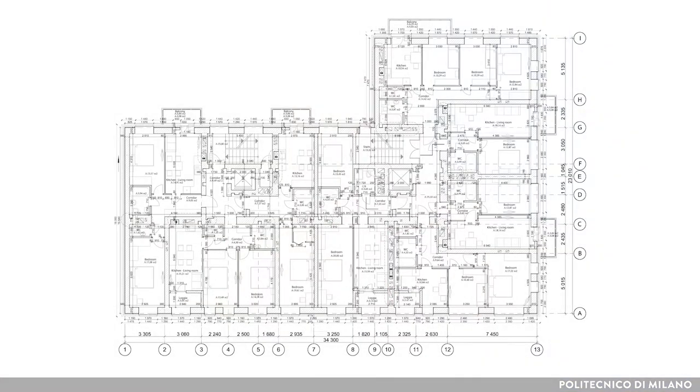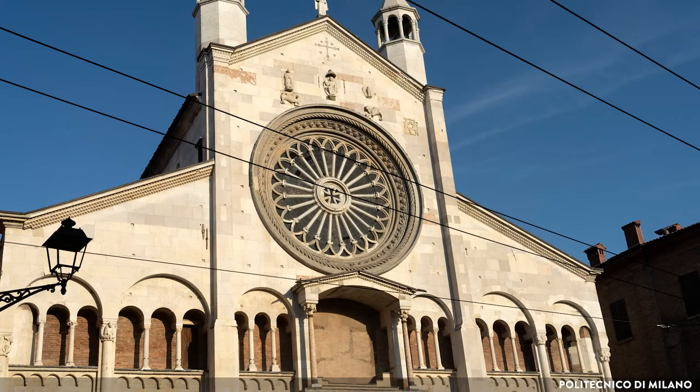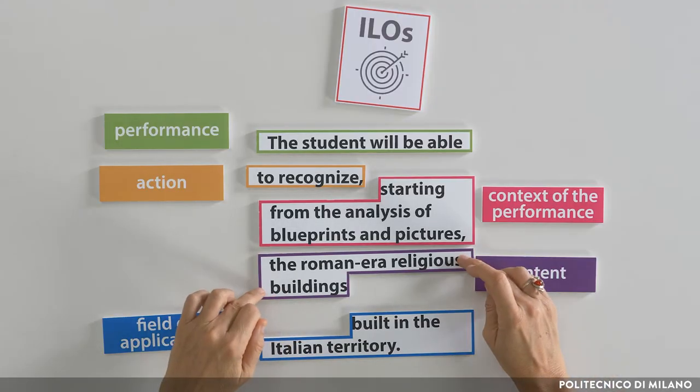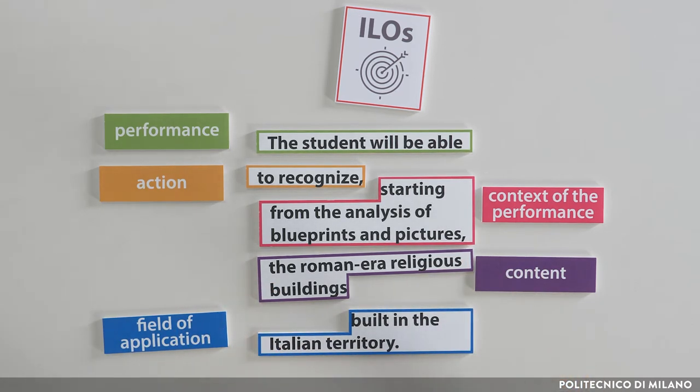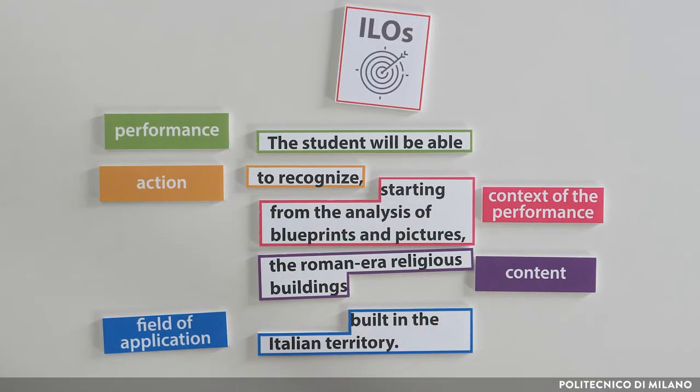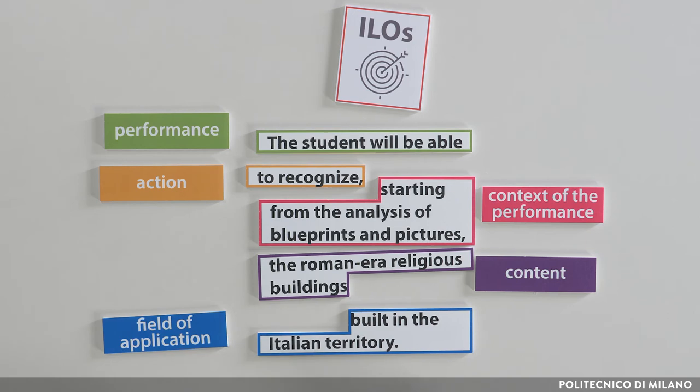I could provide students with a number of plans and photographs of buildings in different styles, created in various contexts, and ask them to recognize the ones in a Romanic style built in the Italian territory and identify them correctly. If, on the other hand, I asked them to write an essay describing the key features of Romanic style buildings in the Italian territory, I would verify a slightly different intended learning outcome — I would be asking them to explain their knowledge, but I would not be verifying the ability to recognize from blueprints and photographs and determine the type of building and its context.